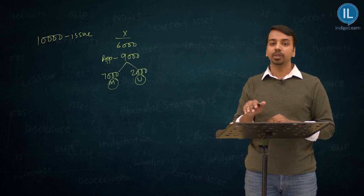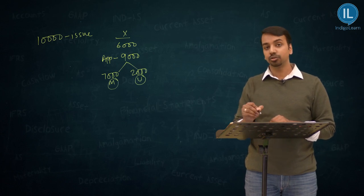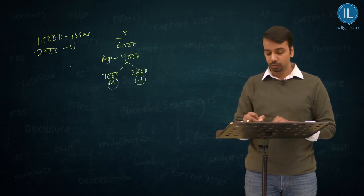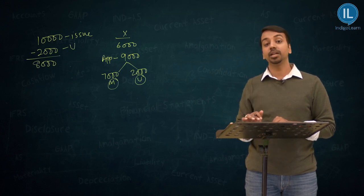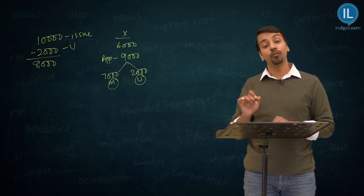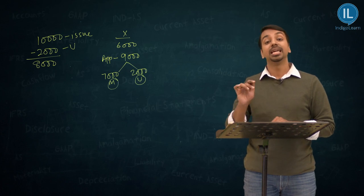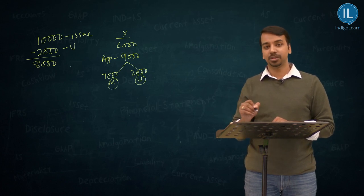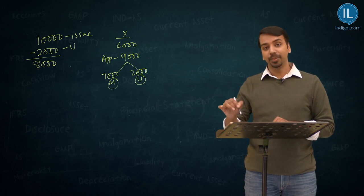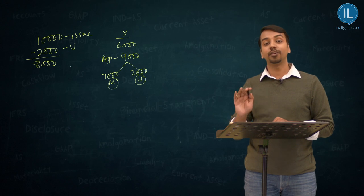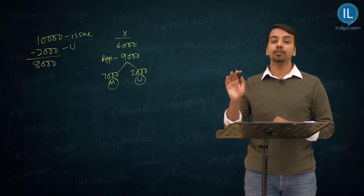How do we look at it logically? Total issue size is 10,000, unmarked application is 2,000, so the shortfall becomes 8,000. Now, because X has given a commitment only for 6,000 shares, it is not responsible to subscribe for the additional 2,000 shares — it committed 6,000 and it gave 7,000. So there is no further liability on account of X.